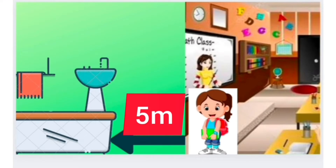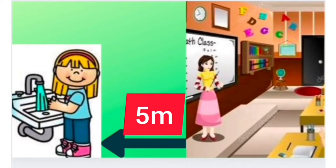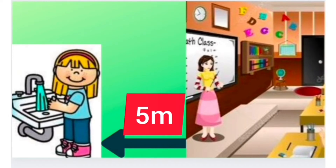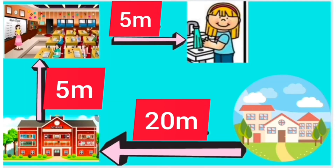Children, can you tell me the total distance covered by Kiran? From home to school, school to classroom, and from classroom to washing point. 20 plus 5 is 25, plus 5 is 30 meters.